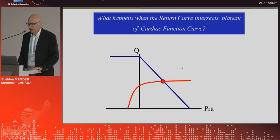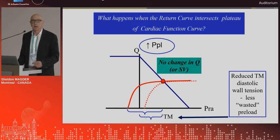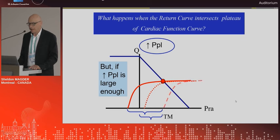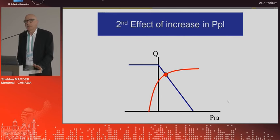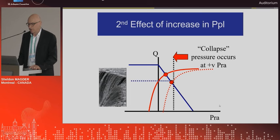What happens when the cardiac function curve intersects the return curve on the flat part of the cardiac function curve? In that case, you can apply PEEP and raise the pressure without a change in right atrial pressure and without a change in cardiac output. When you do that, you actually lower the transmural pressure in the heart — you decompress the wall — reducing what I call wasted preload. However, if you raise it further, you'll reach a point where you decrease cardiac output again. So when ventilating patients, you do not always decrease cardiac output — if you're volume-filled and on the flat part, you will not, but eventually you will. A second important effect is that raising pleural pressure also changes the collapse pressure — the vascular waterfall — occurring at a higher value, which reduces your maximum cardiac output.